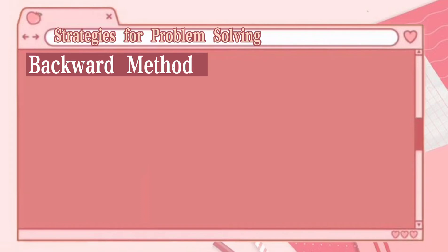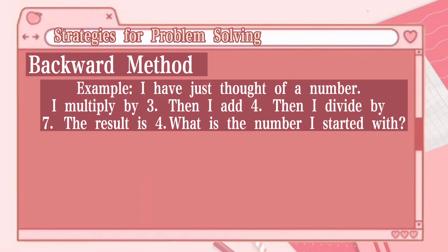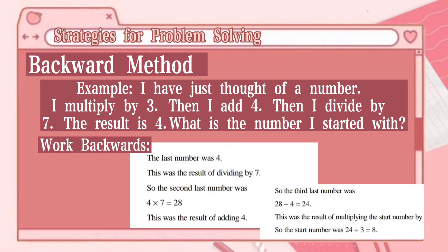Let's use the backward method. The problem is: I have just thought of a number. I multiply it by 3, then add 4, then divide by 7, and the result is 4. What is the number I started with? The last number was 4, which was the result of dividing by 7, so the second-last number was 4 × 7 = 28. That was the result of adding 4, so the third-last number was 28 − 4 = 24. That was the result of multiplying by 3, so the start number was 24 ÷ 3 = 8. In the backward method, we work through the steps in reverse, doing the inverse operations.